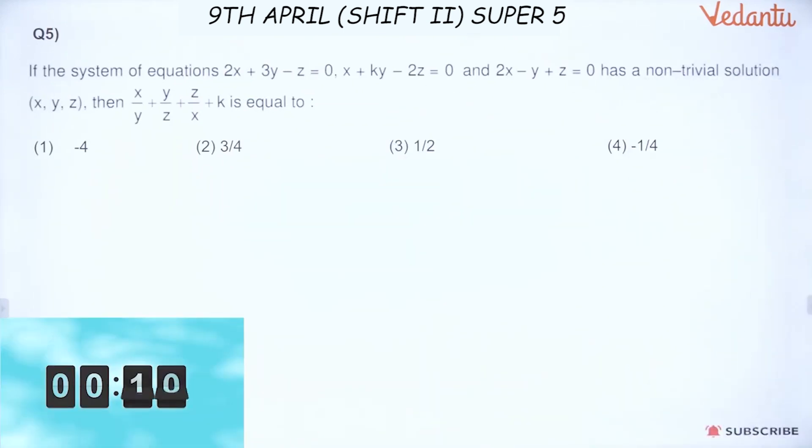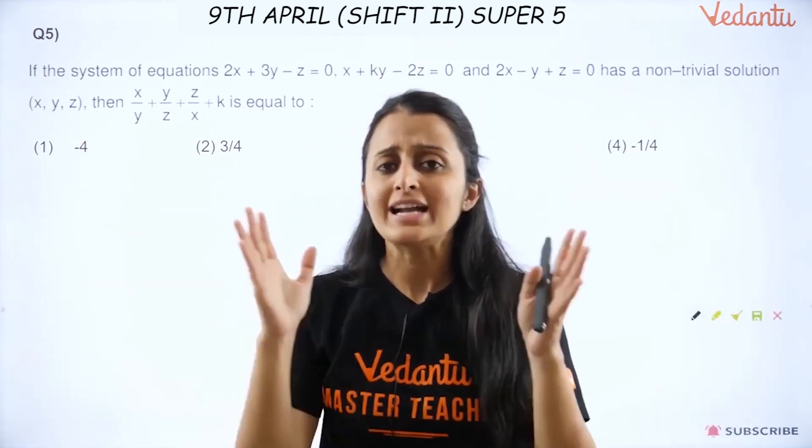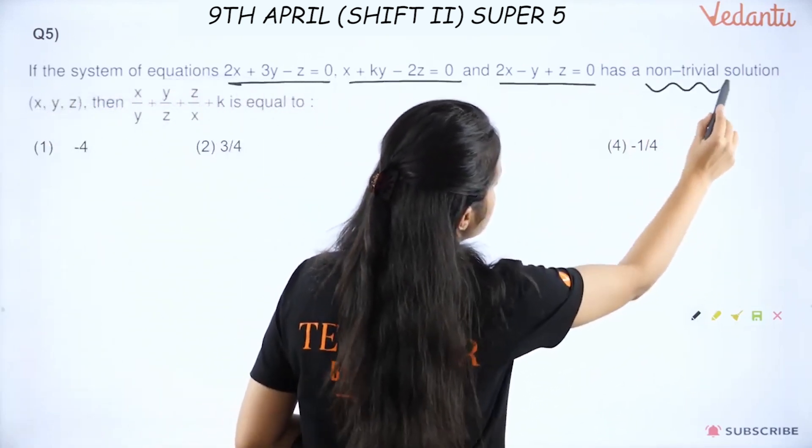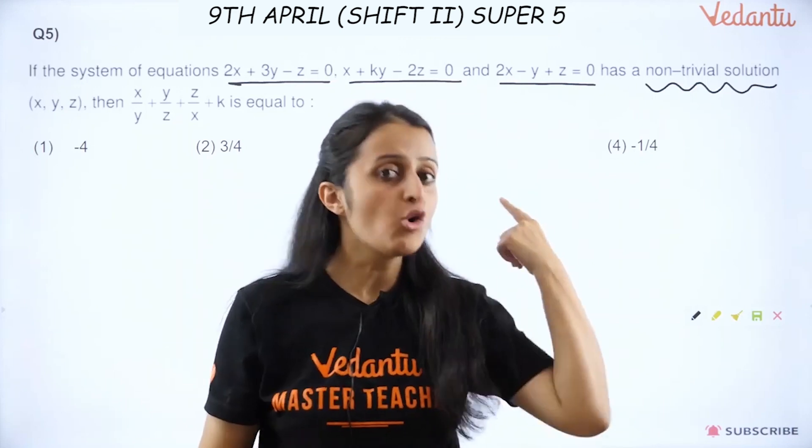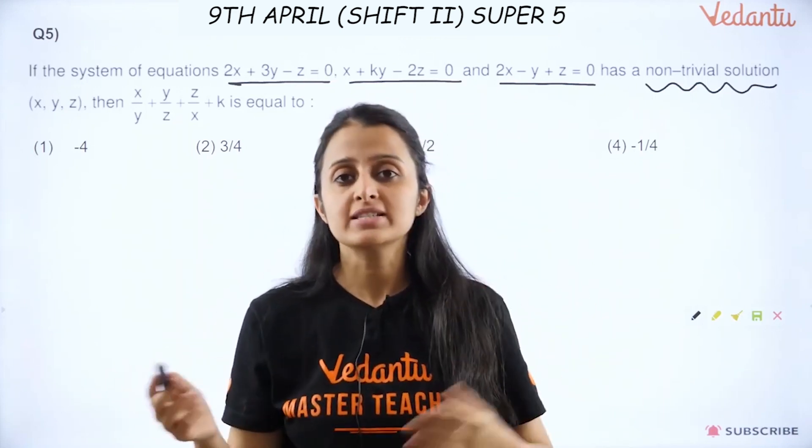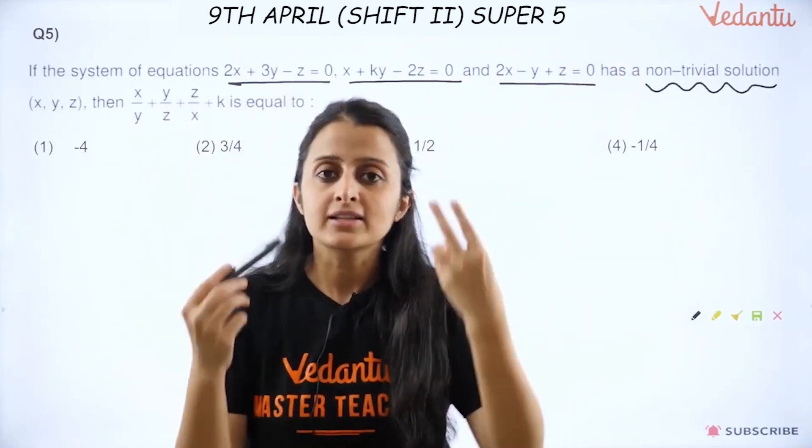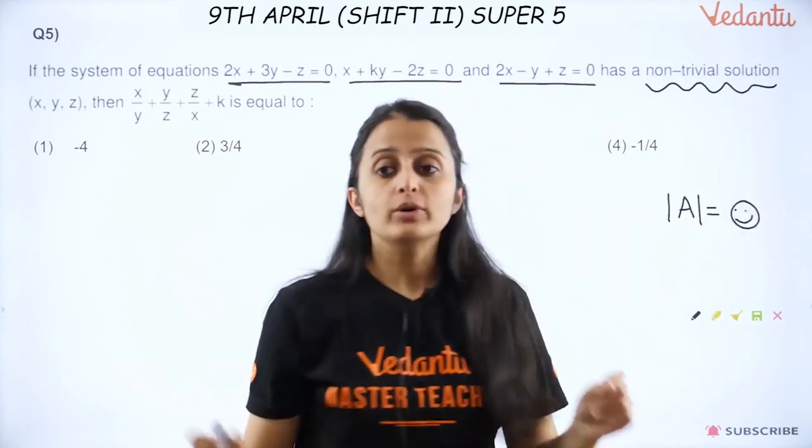Let's get ready for question five. So let's look at the fifth question. It's about matrices. Look at the three equations which are this, this and this. It is mentioned that they have a non-trivial solution. Very simple thing: if you have three homogeneous equations - homogeneous because the right side is all zero - then in this case non-trivial solution comes when determinant of A becomes zero.